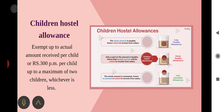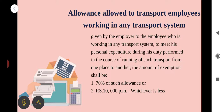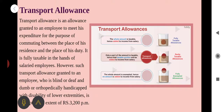Allowances granted to transport employees working in any transport system: the amount of exemption shall be 70% of such allowance or Rs. 10,000 per month, whichever is less. Next, transport allowance — granted to an employee to meet expenditure for commuting between the place of residence and the place of duty. It is fully taxable for salaried employees. However, transport allowance granted to an employee who is blind, deaf and dumb, or orthopedically handicapped with disability of lower extremities is exempted up to Rs. 3200 per month.